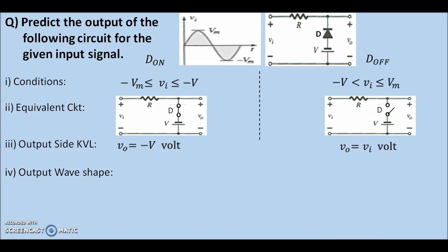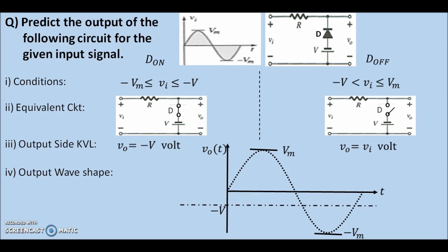Next, we draw the input waveform as it is, but instead of a solid line, we use dashes. Next, we mark decision making voltage on the graph. In our case, it is minus V volts. Then, we mark dOn and dOff regions on the graph with arrows. Then, as per our KVLs pertaining to the two regions, we draw the output waveform. In our case, for dOn region, output follows the input. In the dOn region, we can see as long as the input voltage is between minus Vm and minus V.